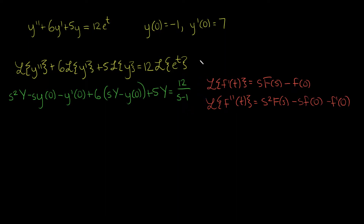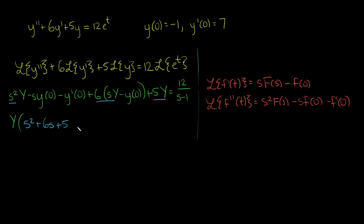Now that we know all this, let's try to do step 2, which is to isolate the Laplace transform of y — big Y. We can factor out all the different parts, so we find s squared plus 6s plus 5 times big Y. Then we have minus s times y(0): y(0) is negative 1, so we can say plus s. Minus y prime(0) is 7, so minus 7. And minus 6 times y(0): y(0) is negative 1, so we add 1. This is equaling 12 over s minus 1.